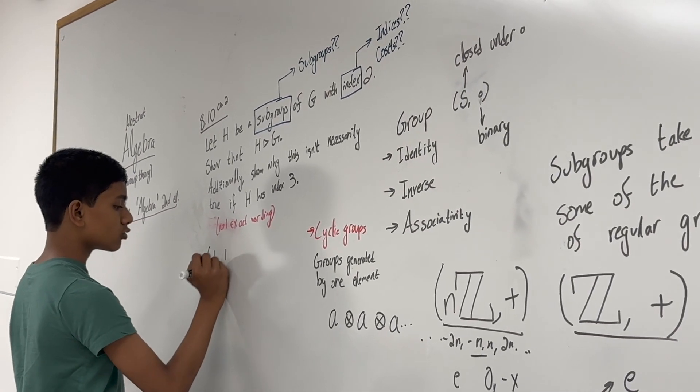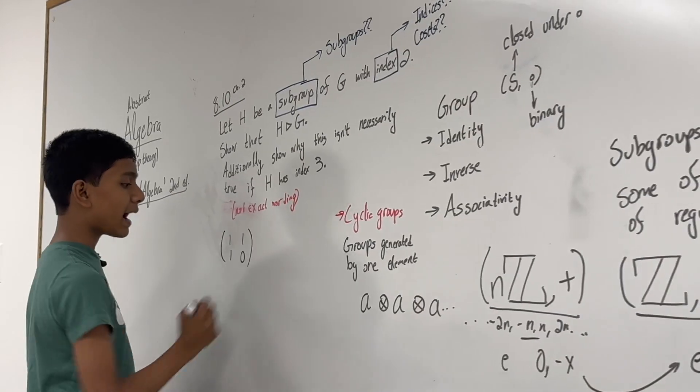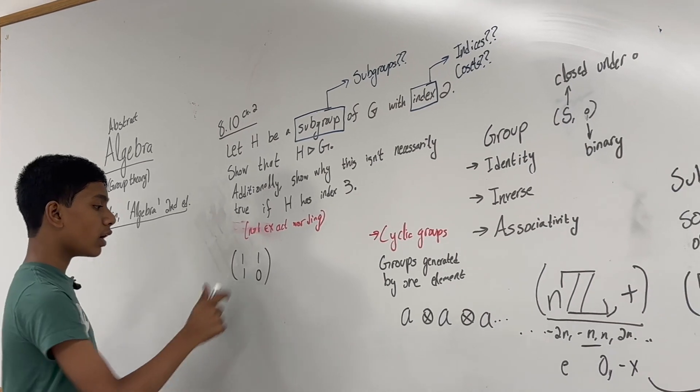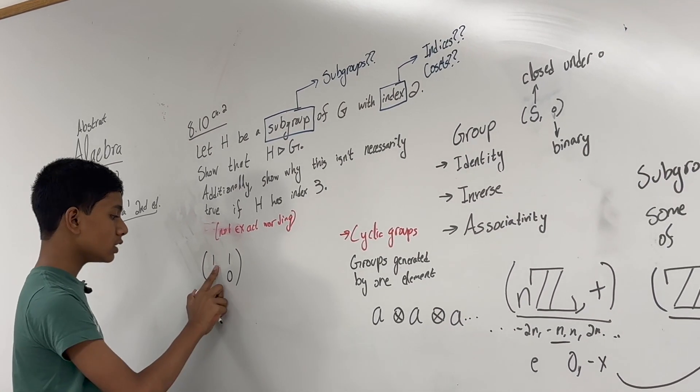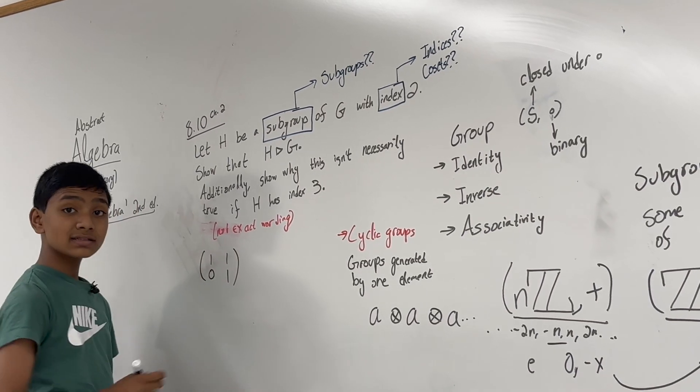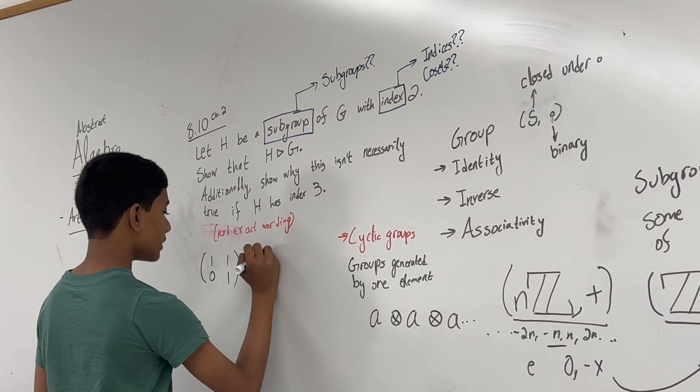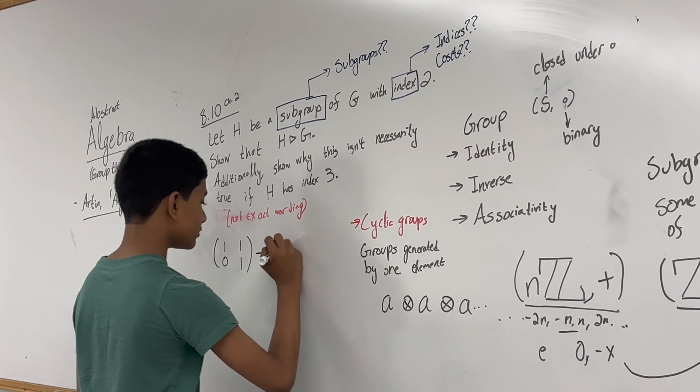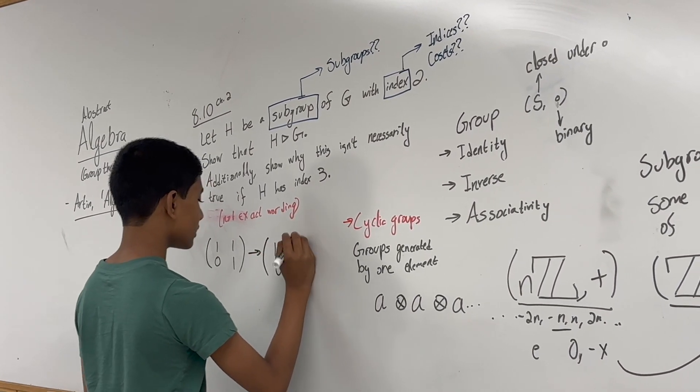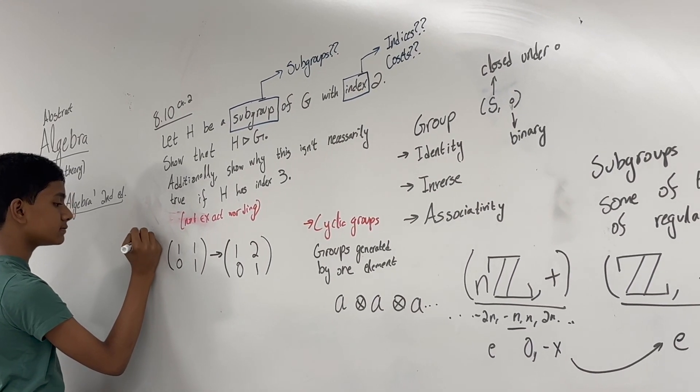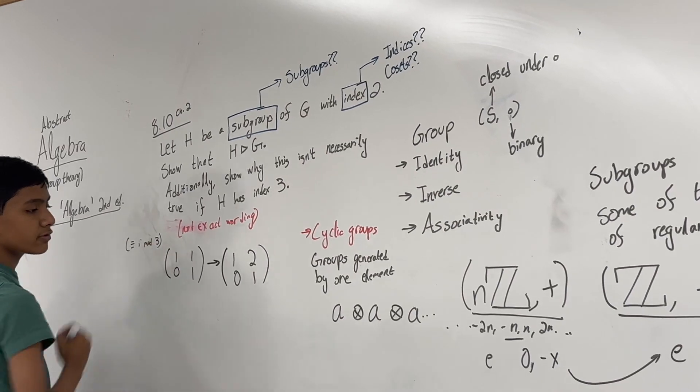One example of a cyclic group is the integers. But some other examples are the integers modulo 12, which makes the clock, or cyclic groups generated by the powers of certain matrices. Like [[1,1],[1,0]], for example. If you square this matrix modulo 3, it has a very small group.